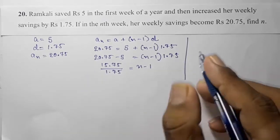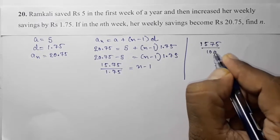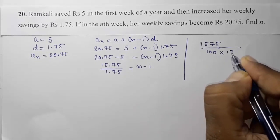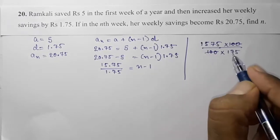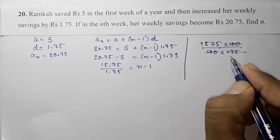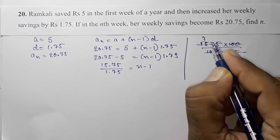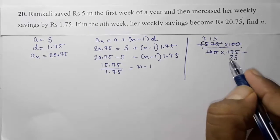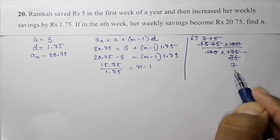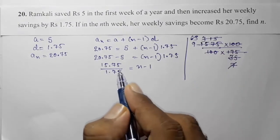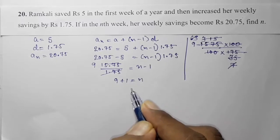To divide 15.75 by 1.75, we convert to 1575 / 175. We can cancel using 5: 1575 / 175 simplifies — dividing both by 25 gives 63 / 7 = 9. So n − 1 = 9, which means n = 9 + 1 = 10. Therefore n = 10.